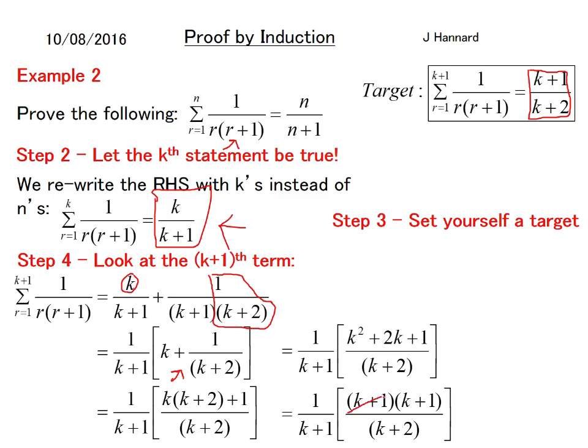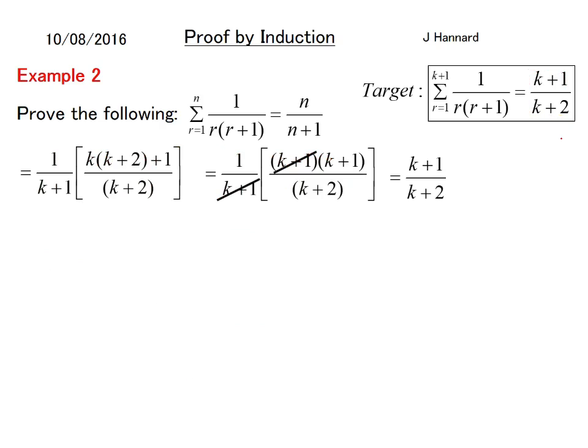And now we see one k plus 1 on the top and one k plus 1 on the bottom and they can cancel. And that one is just one times this fella. So what we're left with is simply just k plus 1 over k plus 2. And what do you know, that is our target. So we have met our target and now we're going to tell the world we've done it.